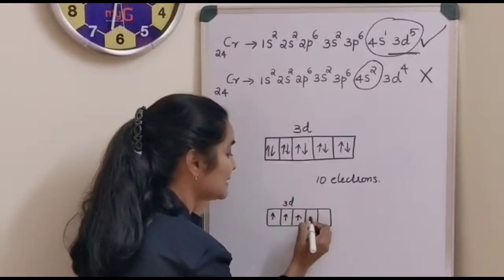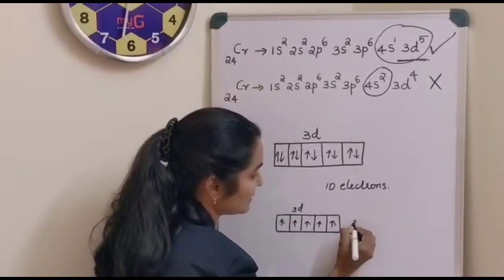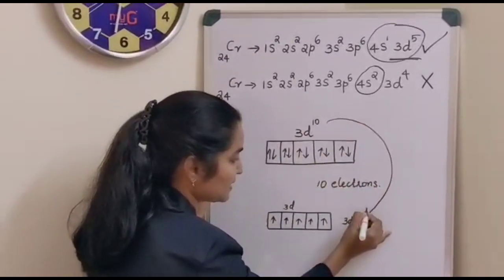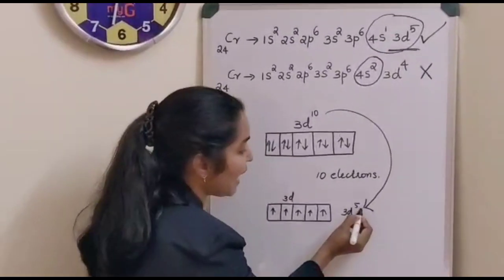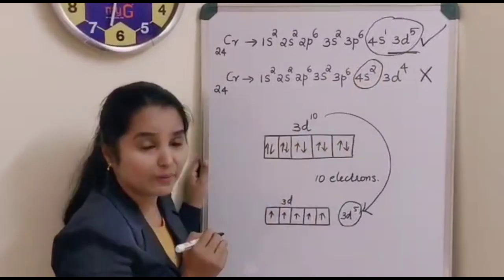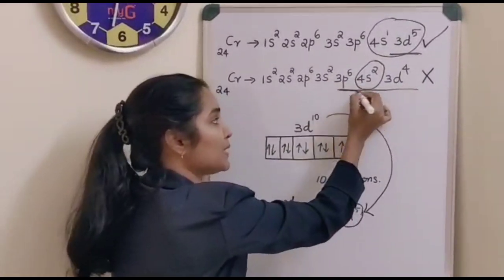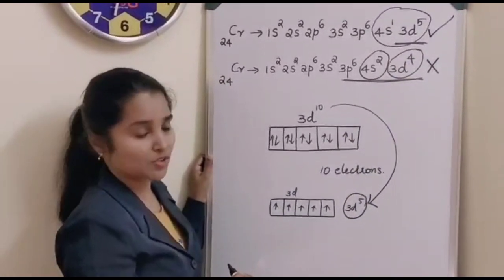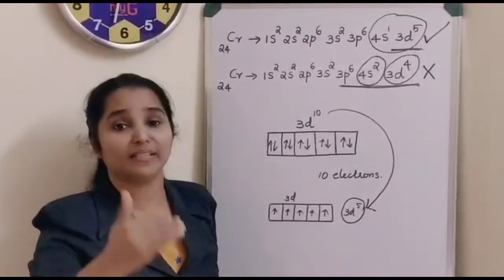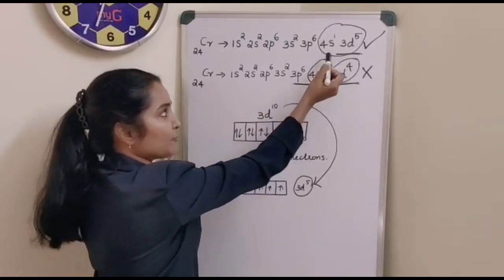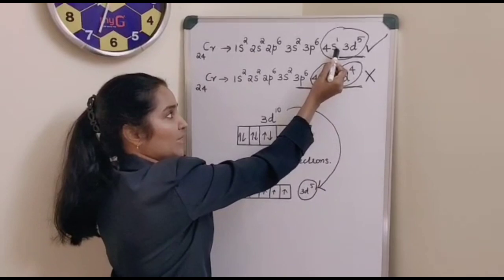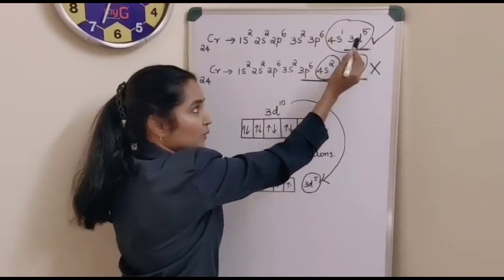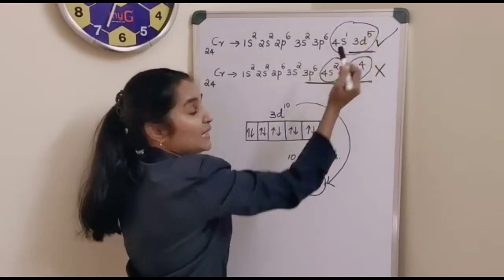If it is half-filled, one electron will be placed in each orbital. This gives a half-filled 3d sub-shell. But if filled according to the Aufbau principle, 3d would not be half-filled. So in order to attain the extra stability offered by the half-filled orbital, instead of filling 4s as 4s2, that 1 electron jumps to the next higher energy orbital 3d, making it 3d5.